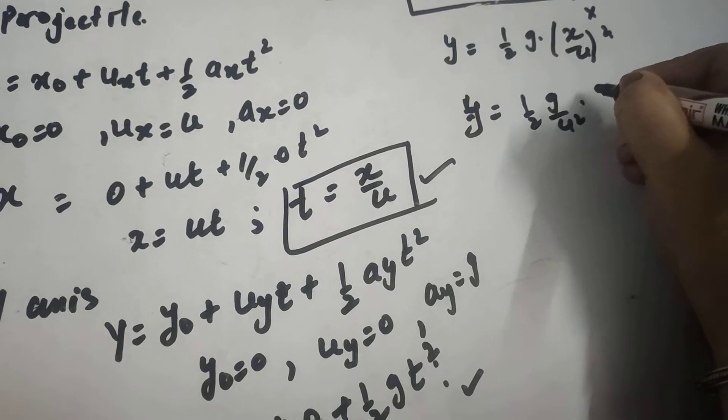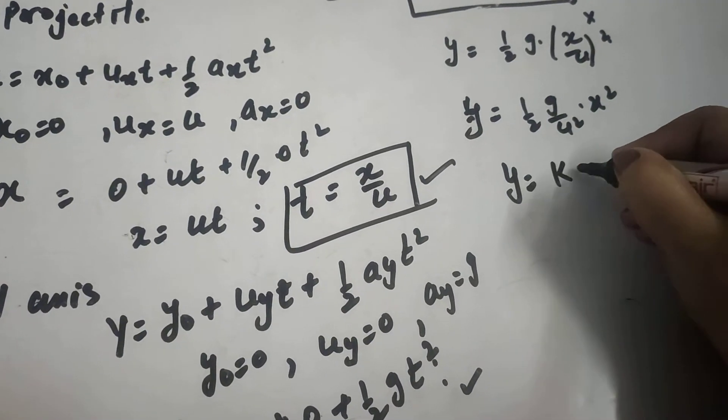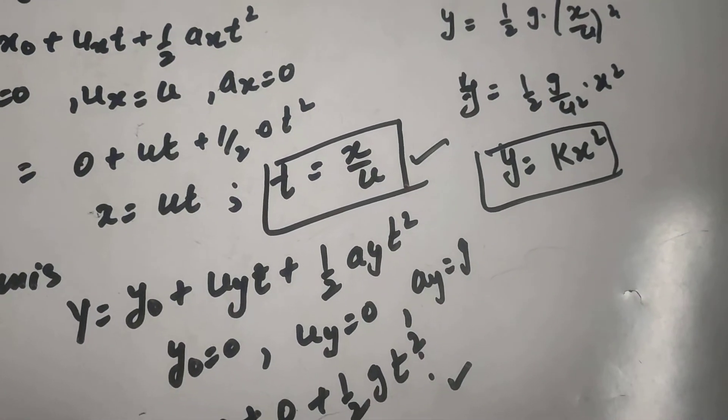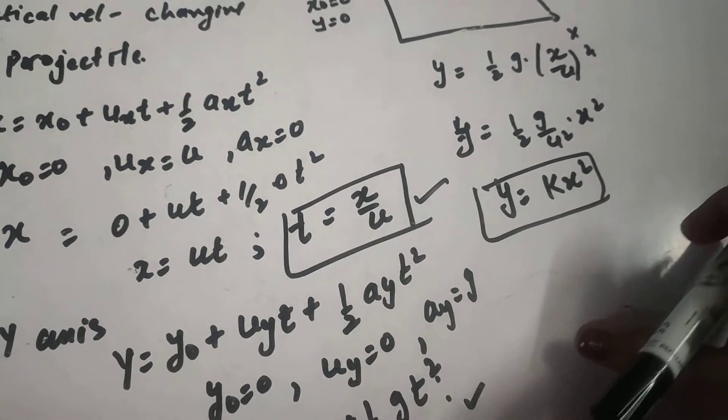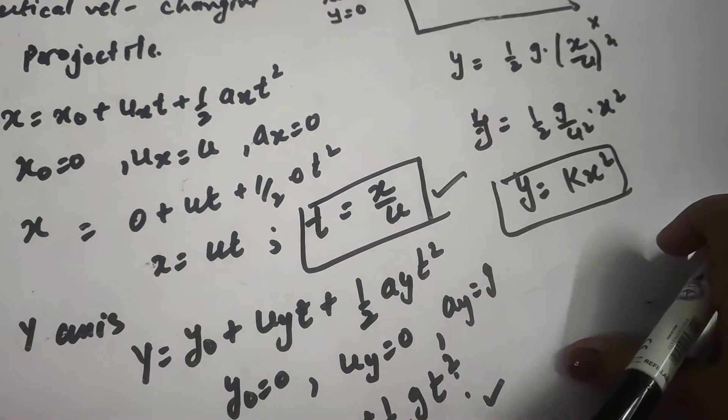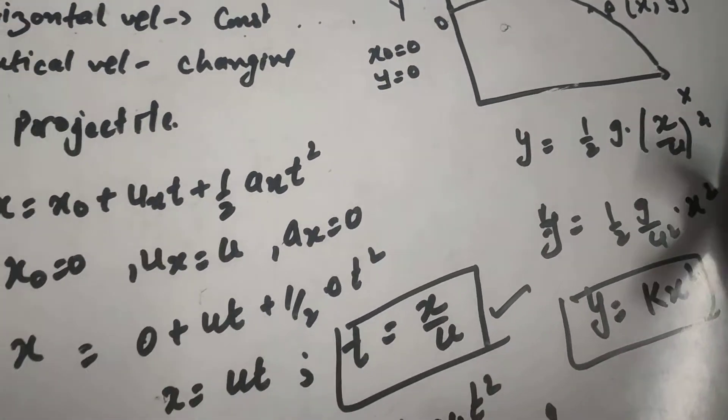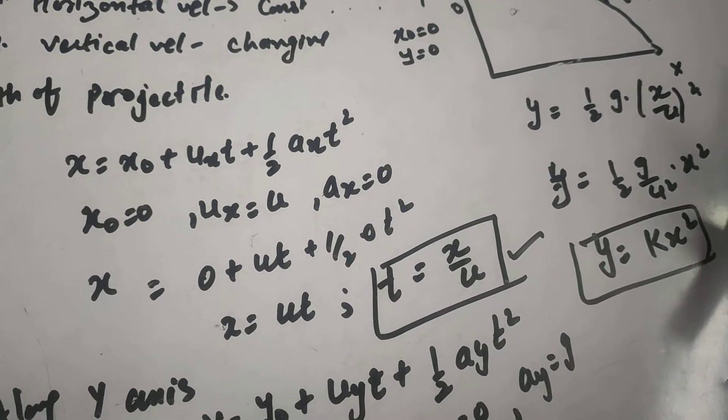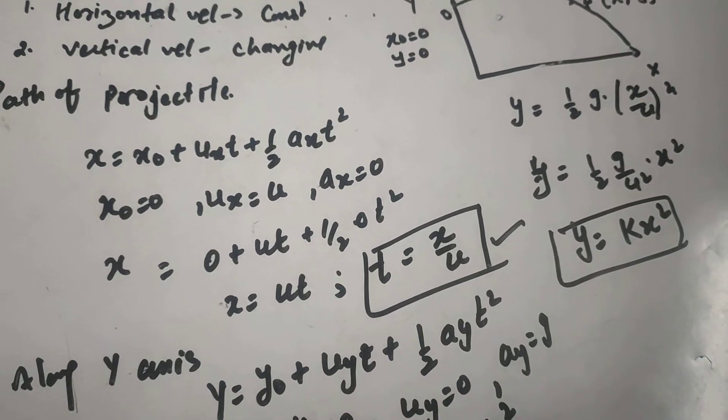Or we can write it as Y equals K·X², which is the equation of parabola. So we can say that when a projectile is projected with horizontal velocity U, it will follow a parabolic path, which I have already drawn here. Now in my next video, we will study about how to find out the time of flight, horizontal range, and velocity of the object at any instant of time.